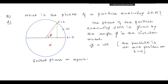You have understood that this angle represents phase. So initially — initially means at t equal to 0 — if the particle is not here at t equal to 0, by 'particle' I mean the one executing SHM, and the parent particle executes uniform circular motion. There is a distinction.